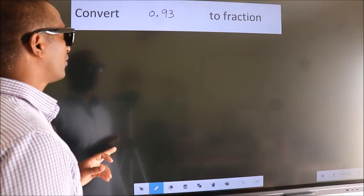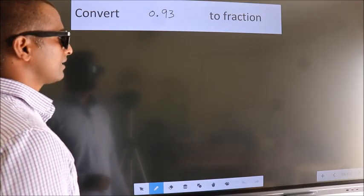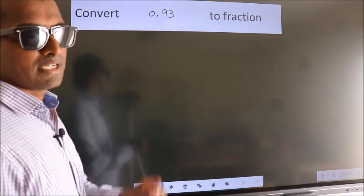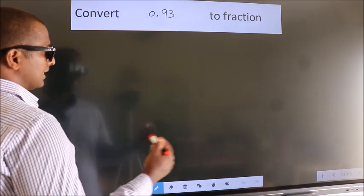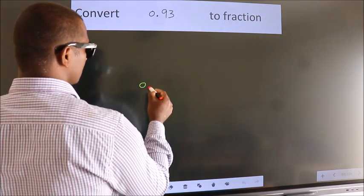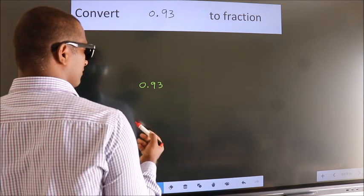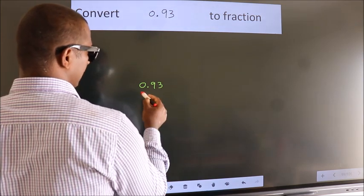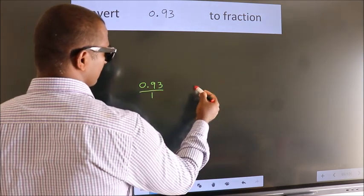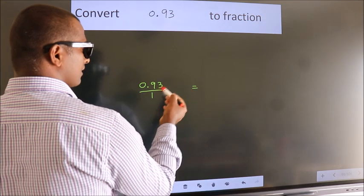Convert 0.93 to a fraction. Given is 0.93. Now we take it as 0.93 by 1. To convert this to a fraction,